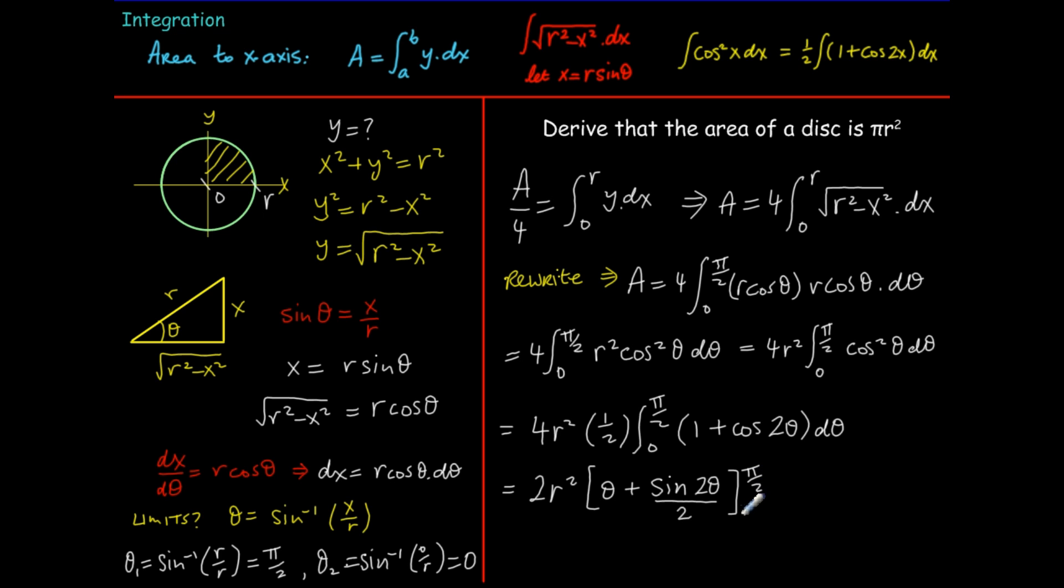We're almost there. This equals two r squared. We're going to put in pi over two instead of theta plus sine two times pi over two. Now two pi over two is just sine pi divided by two and the sine of pi is zero, that's a nice result. Then we subtract when we sub in zero as our limit, so that's zero minus sine two zero over two. The sine of zero is also zero.